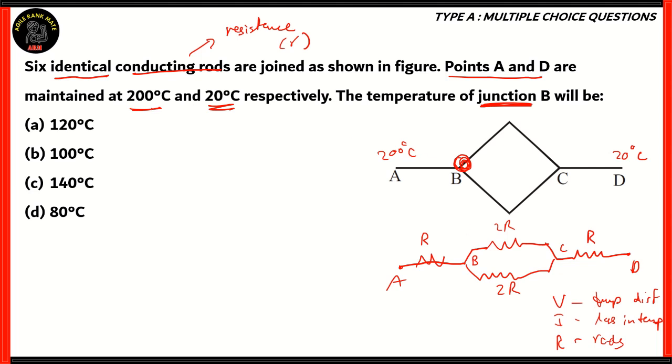Now, the temperature difference. We have 200°C at A, and 20°C at D. So the temperature difference can be easily calculated as 200 minus 20, which is 180°C.